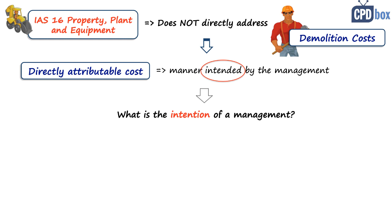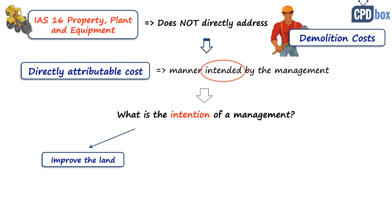So let's ask: what was the intention of management when they purchased the building together with the land? Always look to the original intention or reason why the building and land were acquired, as this gives further direction. Scenario one: the company acquired the land with the building to demolish the building, make improvements, and then sell the land. Here the demolition cost can be seen as directly attributable to bringing the land to the condition intended by management, so you should add these demolition costs to the cost of the land as a land improvement.